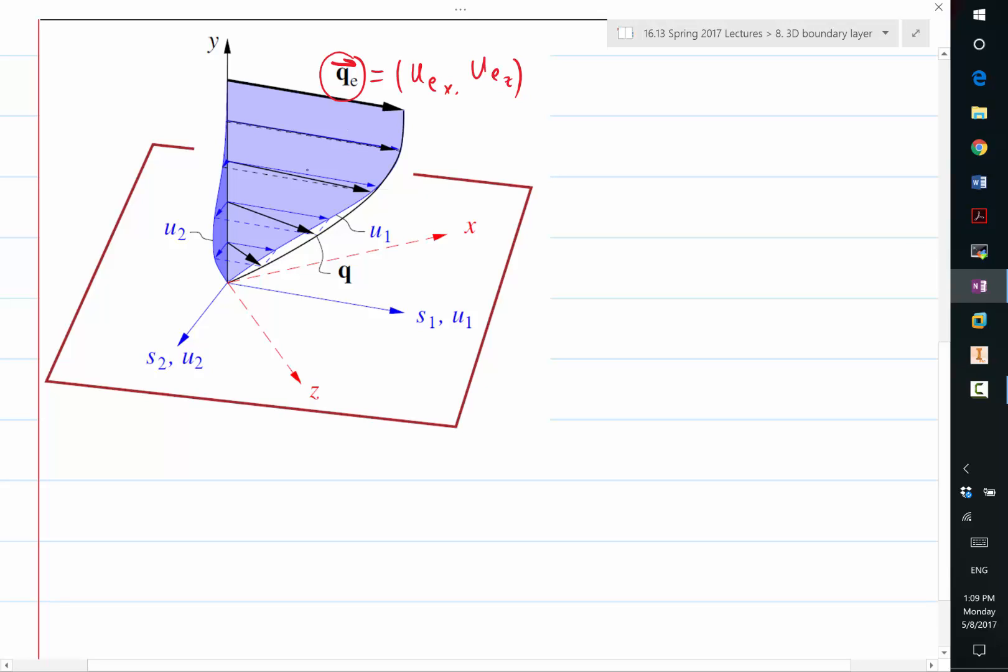If you project the velocity components inside the boundary layer into three different components, first of all, there is a V component.